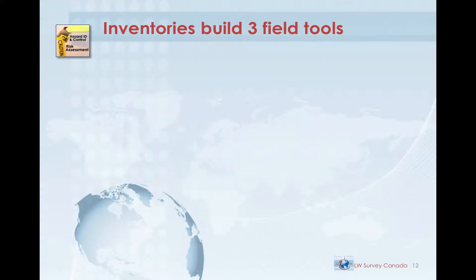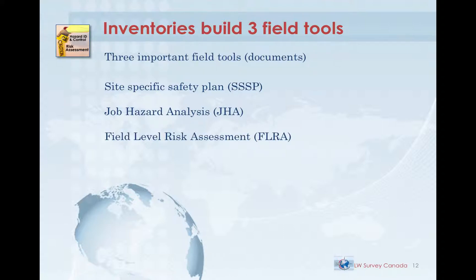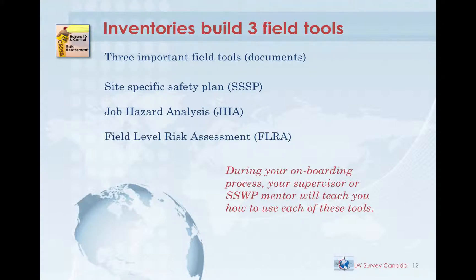The information we gather and the decisions we make regarding hazards and controls becomes the basis for three field documents you'll be using. Try not to get hung up on the specific names of these three tools — different customers call them different things. It's the purpose that we want you to focus on. We'll be looking at the site specific safety plan, a job hazard analysis, and a field level risk assessment. During your onboarding process, your supervisor or short service worker mentor will teach you how to effectively use those tools. You can also find detailed descriptions in your safety manual.